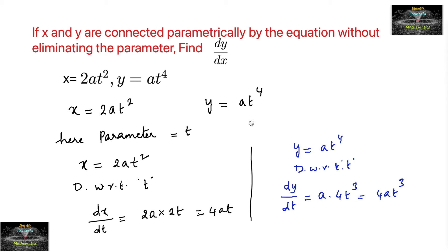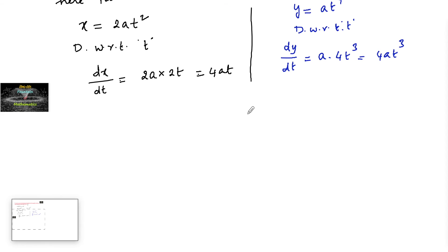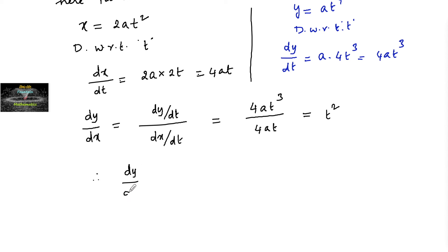And so dy/dx can be written as dy/dt upon dx/dt. So dy/dt is 4at³ upon dx/dt is 4at. So after cancellation you will get t². Therefore, the differentiation of the given function is equal to t².